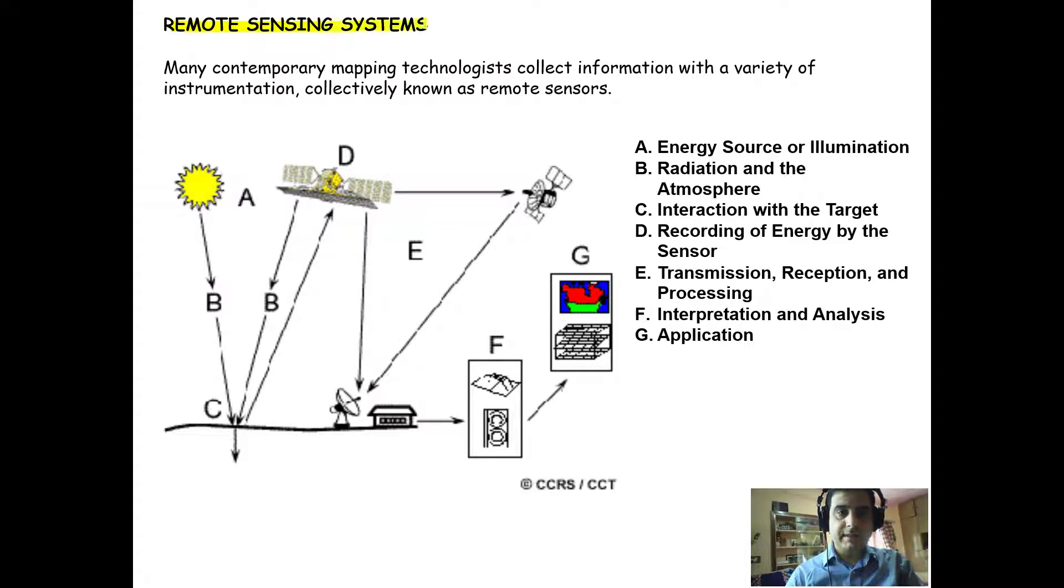Now talking about remote sensing systems, what forms a remote sensing system? These are the components, all of them, which are required for a remote sensing system. We need to have a source of illumination as sun, we need to have an atmosphere through which the radiation electromagnetic spectrum passes.